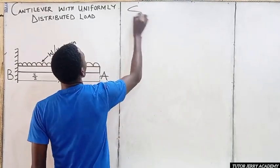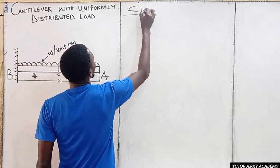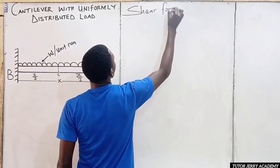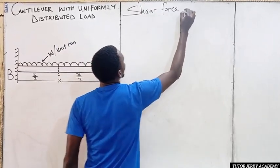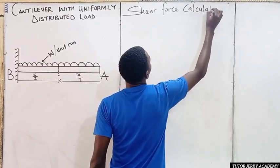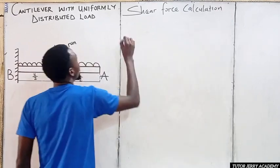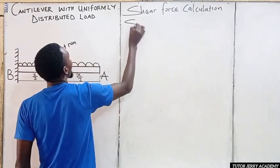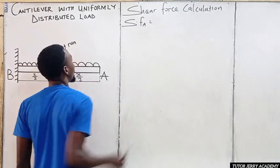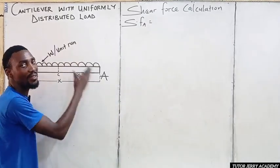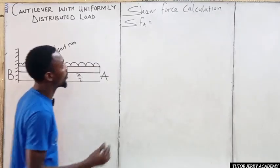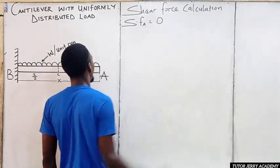So let's do our shear force calculation. We are going to calculate the shear force at point A. If you look at point A, we don't have any force there, so the shear force at A is equal to zero.